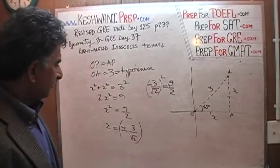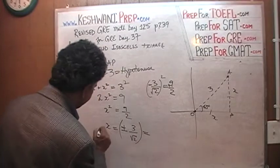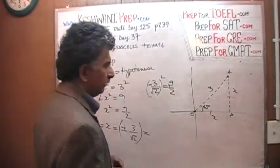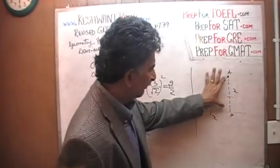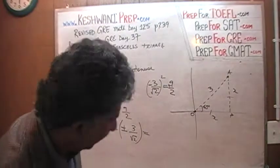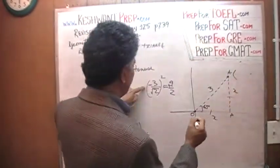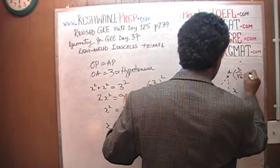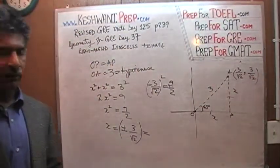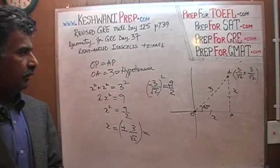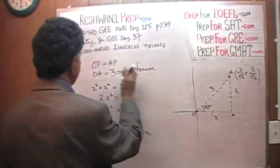Here, of course, we only have positive values of X because it's going this way. So what are the coordinates of point A? The value of X is same as the value of Y because they are equal. This distance is same as this distance. Therefore, the coordinates of this point are 3 over root 2 and 3 over root 2. That's it. Those are the coordinates of A.